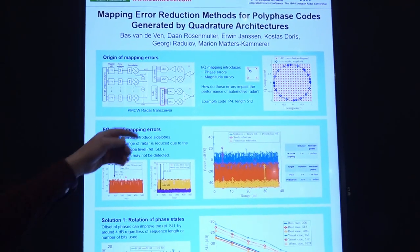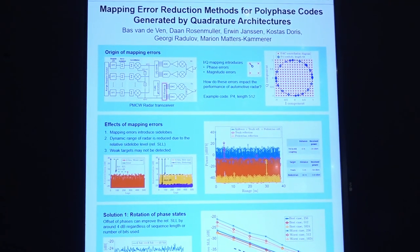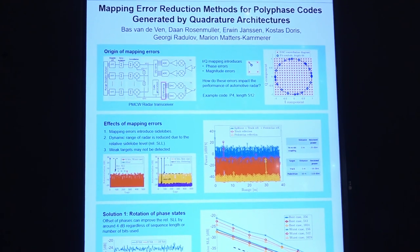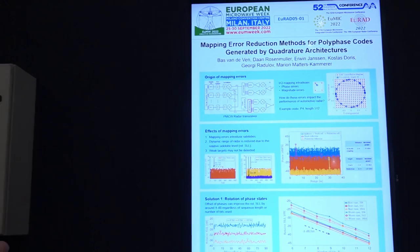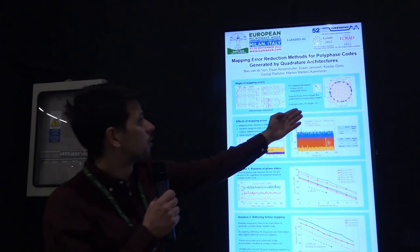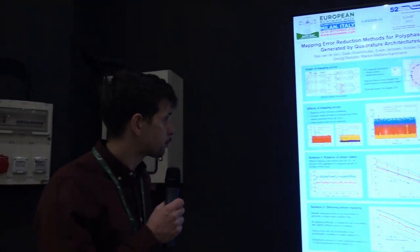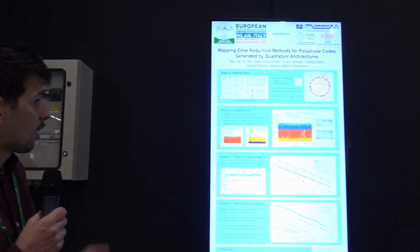So these mapping errors will be in the form of phase errors and magnitude errors, and the main question is to what extent do these impact the performance of the overall radar system. This has been simulated in MATLAB, and it's been shown that these mapping errors introduce side lobes.